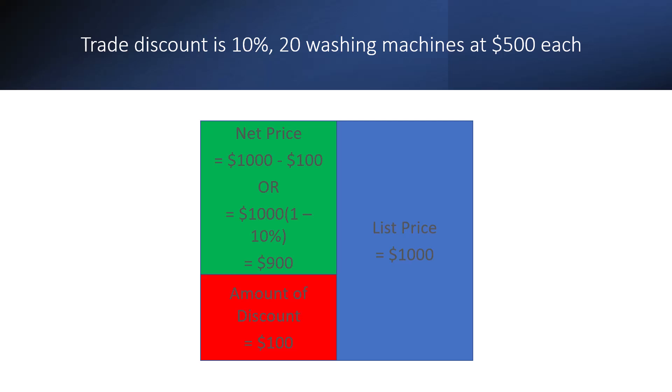Remember to change the percent to decimals while converting. You can see the relation between net price, list price, and amount of discount in this diagram. The list price is always the total, and the amount of discount and the net price add up to the list price.